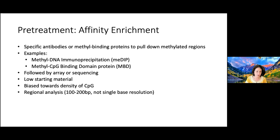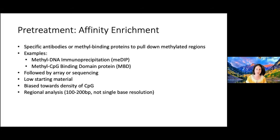Another pre-treatment is affinity enrichment, using antibodies or methyl-binding proteins that pull down methylated regions — methods called MeDIP (methyl-DNA immunoprecipitation) or MBD (methyl-CpG binding domain protein). Once you have those regions, you can follow by array or sequencing. These don't require a lot of starting material and are biased towards higher-density CpGs, so you get more CpG islands but may miss isolated CpGs. Earlier versions did not provide single-base resolution, as the arrays gave more of a regional analysis.